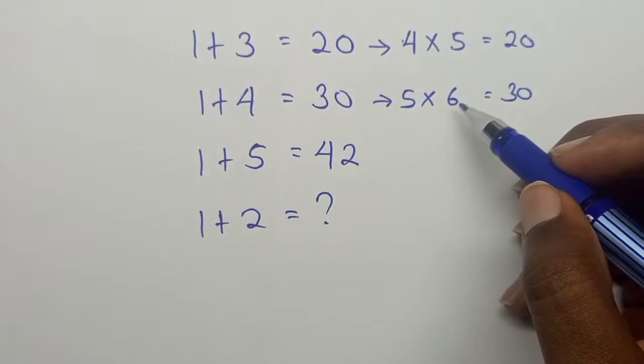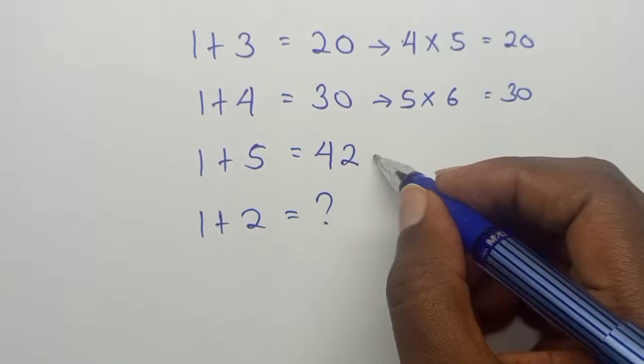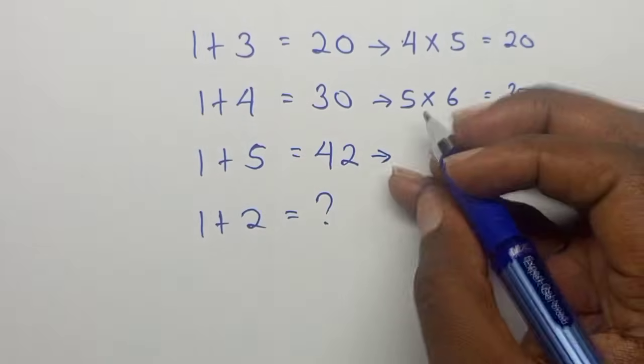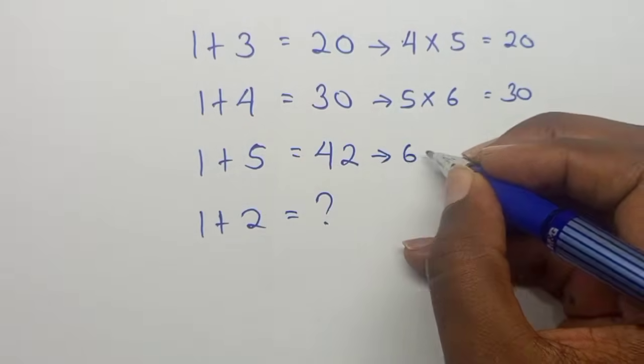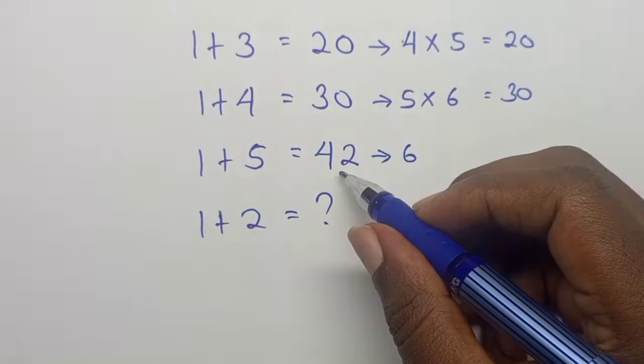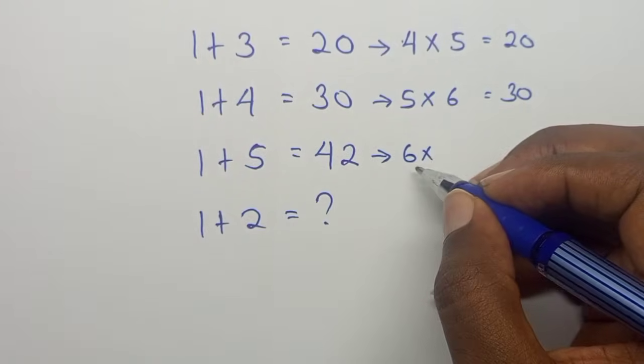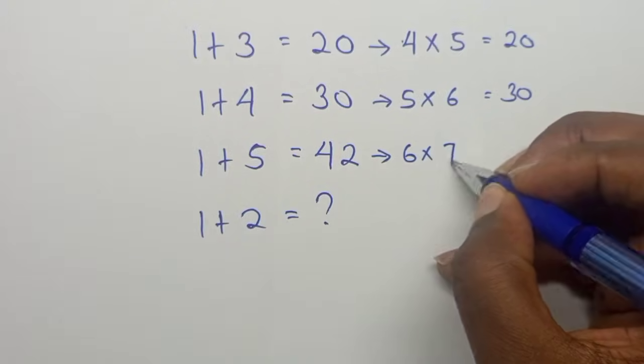Not predecessor, its successor. So 1 plus 5 is actually 6. What did they do to the 6 to get 42? They multiplied by the successor of 6, which is 7, to get 42.